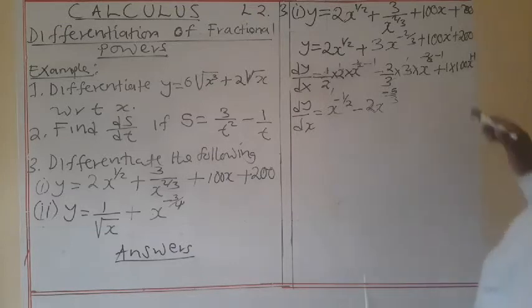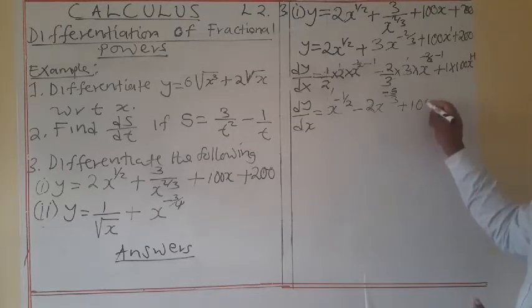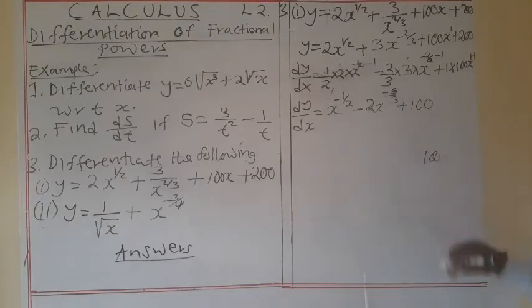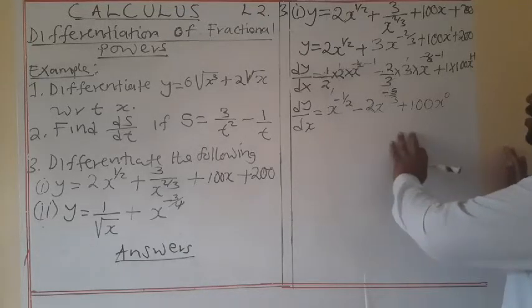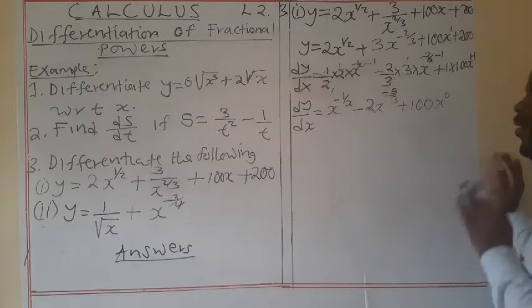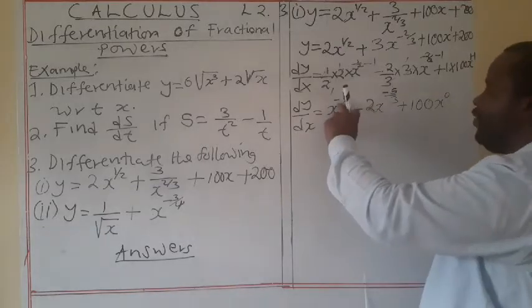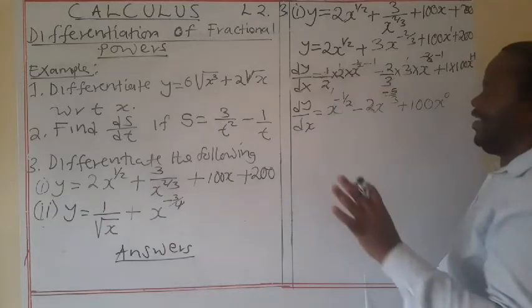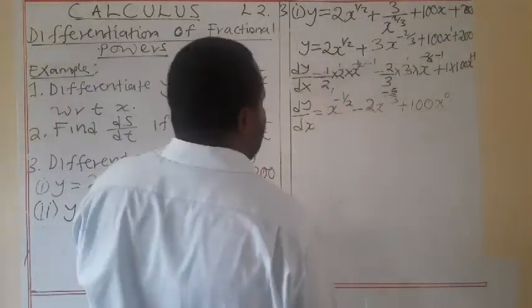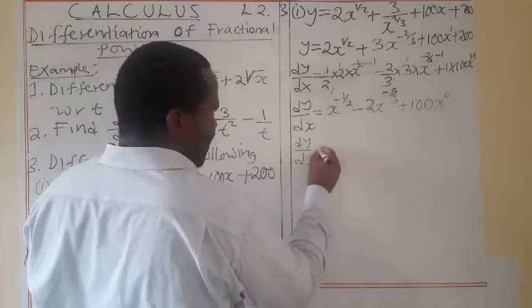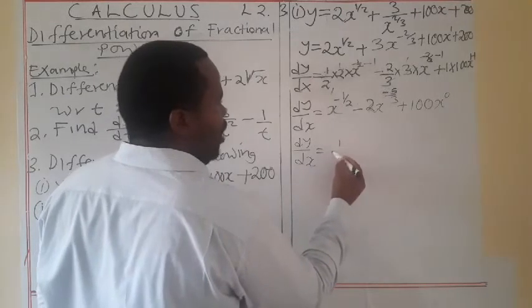Then we deal with the 100x term: 1 by 1 is 1, by 100 you have 100. Plus 100, and x to the power 0 is 1. Now we might think this is the correct answer, but we don't leave our answer with the negative index as well as the fractional index. So we must get rid of the negatives and the fractions. The negative alone means 1 over. So dy/dx is equal to 1 over x to the power half.